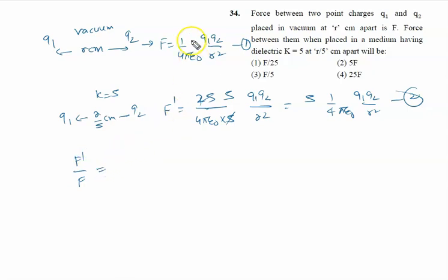We will get, because one upon four epsilon not q1 q2 r square is common, F dash is given by 5F. The right answer of this problem is option two, that is 5F.